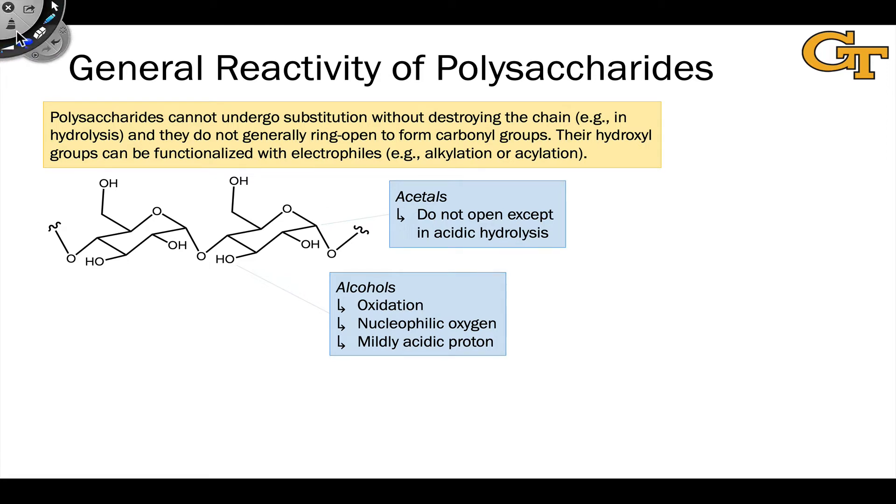And so these generally don't open, except under acidic hydrolysis conditions, because rather than dealing with hemiacetals in the structure, we have acetals. Every monomer unit includes one acetal involving an oxygen connected to the next monomer unit. These can undergo hydrolysis. The glycosidic linkages can be opened by water only under acidic conditions, where this oxygen gets protonated and departs to form an oxocarbenium ion, and then water comes in to form the hemiacetal.